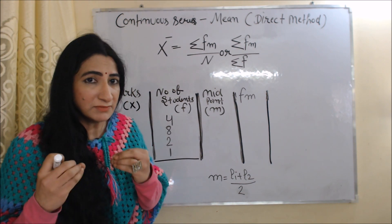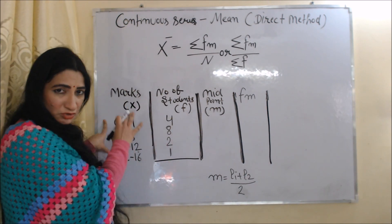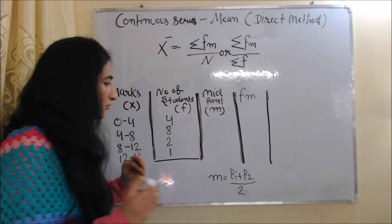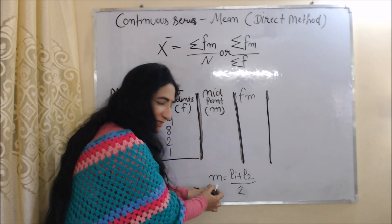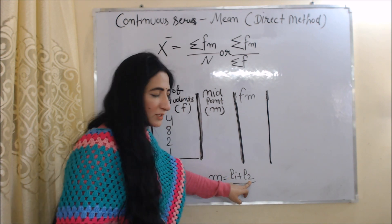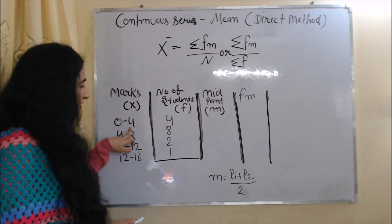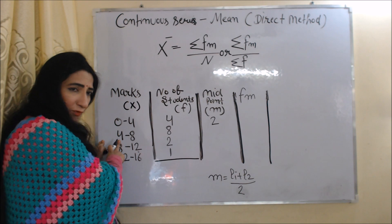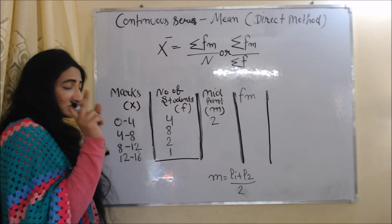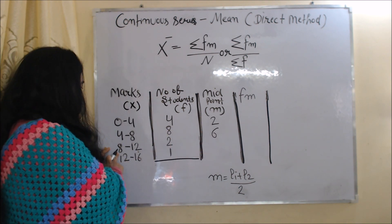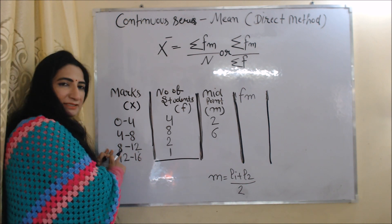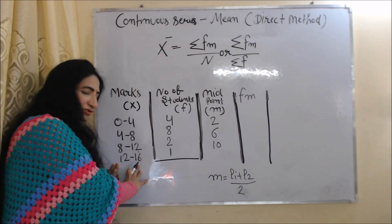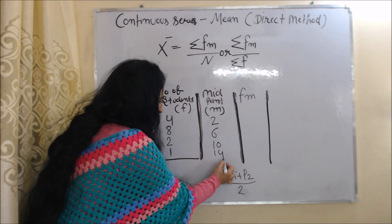In order to calculate mean, we first need to calculate the midpoint from the class intervals using the formula: m = (l1 + l2) / 2, where m is the midpoint, l1 is the lower limit, and l2 is the upper limit. For 0–4: (0+4)/2 = 2. For 4–8: (4+8)/2 = 6. For 8–12: (8+12)/2 = 10. For 12–16: (12+16)/2 = 14. So we now have the midpoint values for all class intervals.